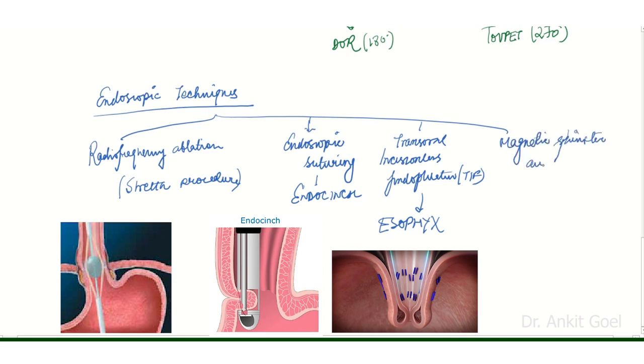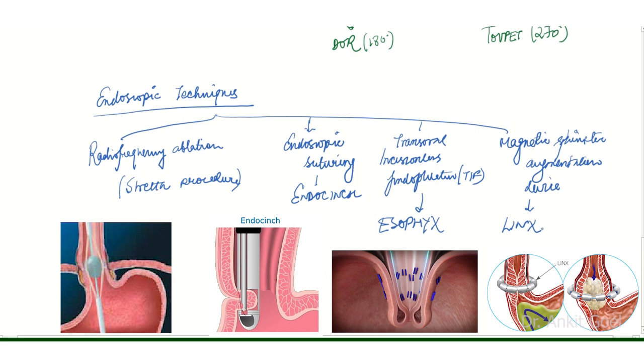The next is the magnetic sphincter augmentation device, that is the LINX device. The LINX device is implanted laparoscopically around the lower esophageal sphincter and it consists of titanium beads with magnetic cores. As we can see in the image, when the food bolus passes through the lower esophageal sphincter, the ring of magnets increases in diameter and allows the food to pass through it. But as soon as the food is passed, the magnets again come together and close the lower esophageal sphincter, preventing reflux.